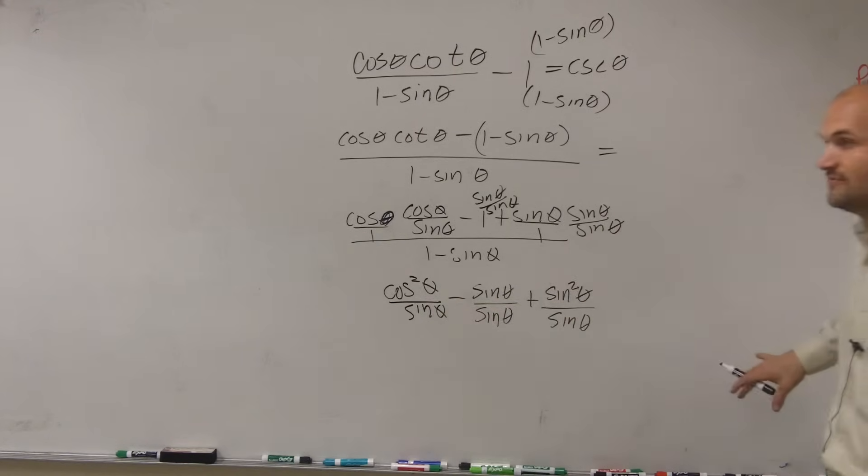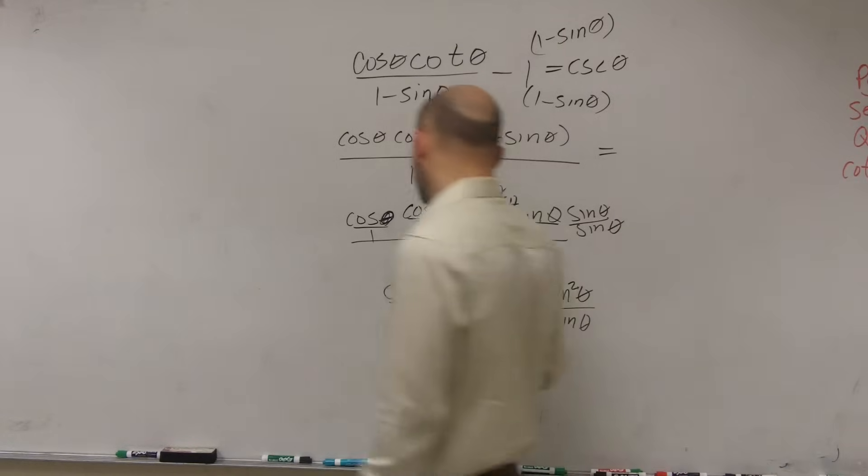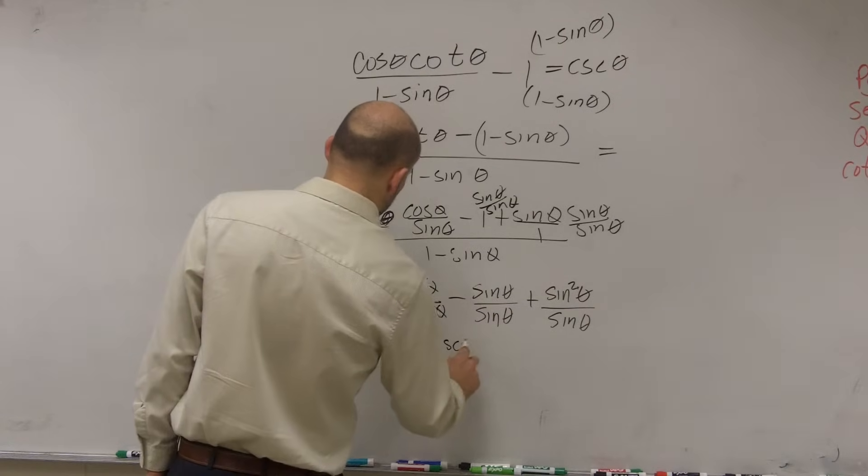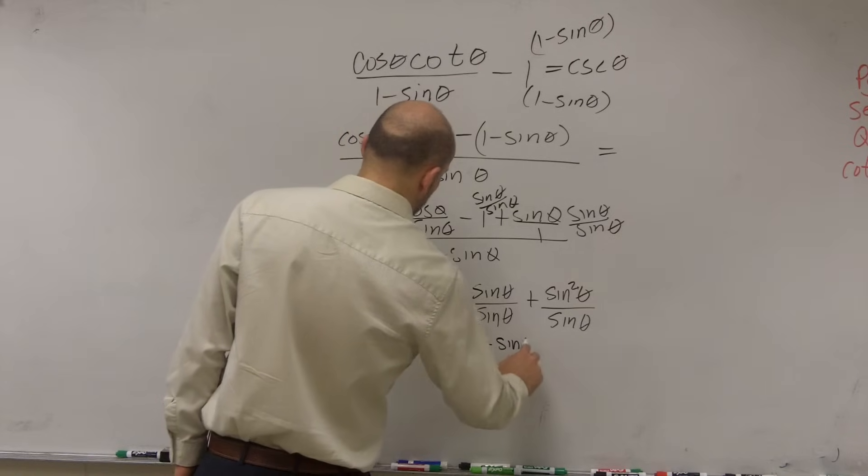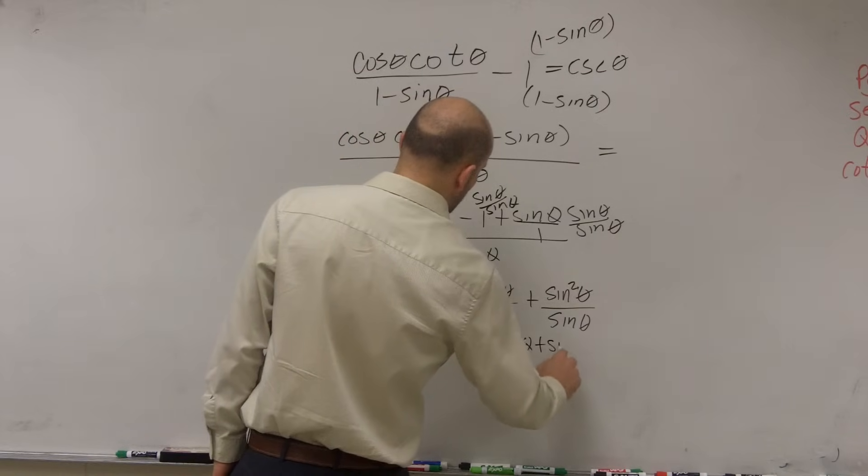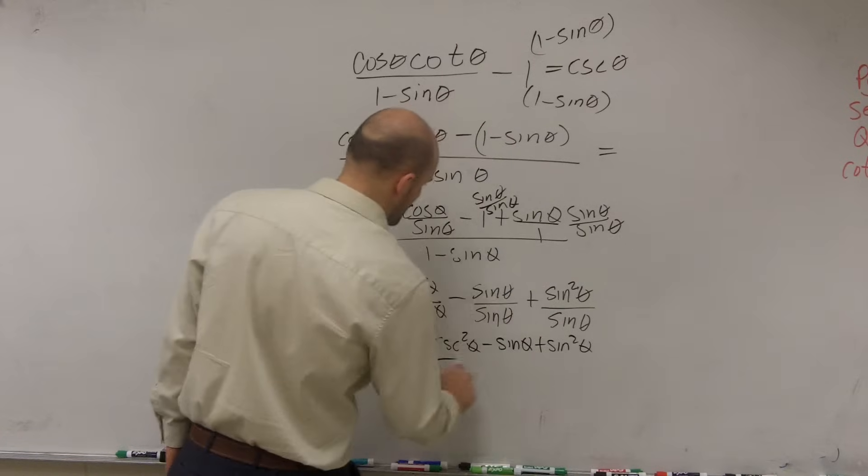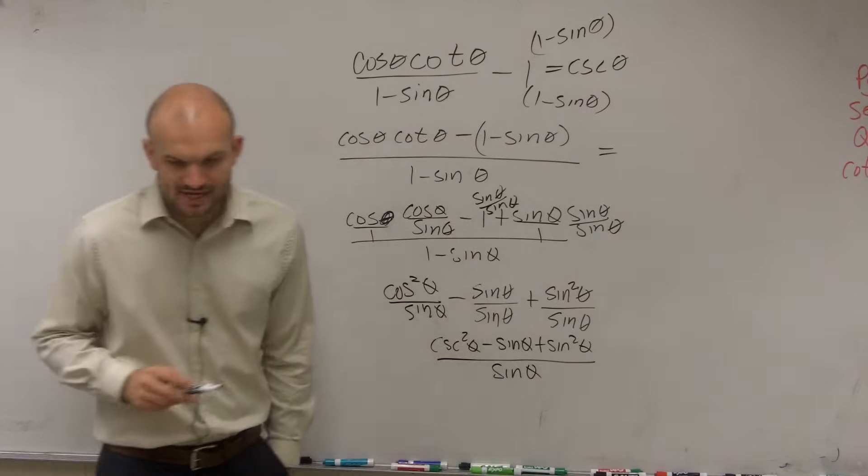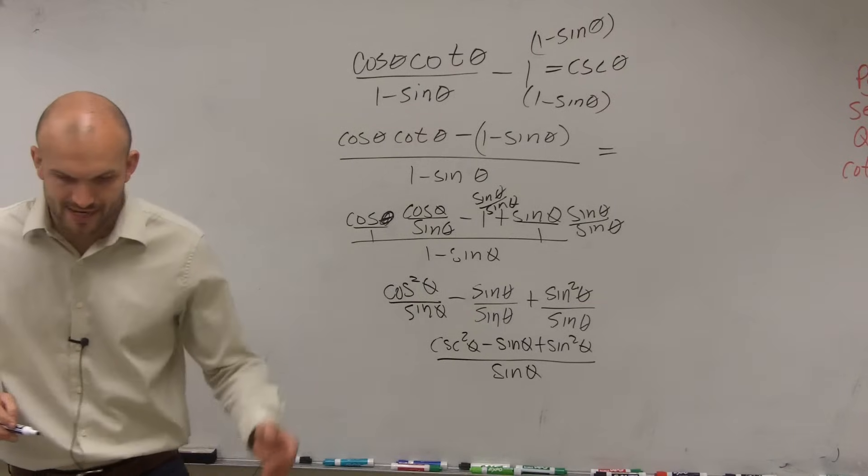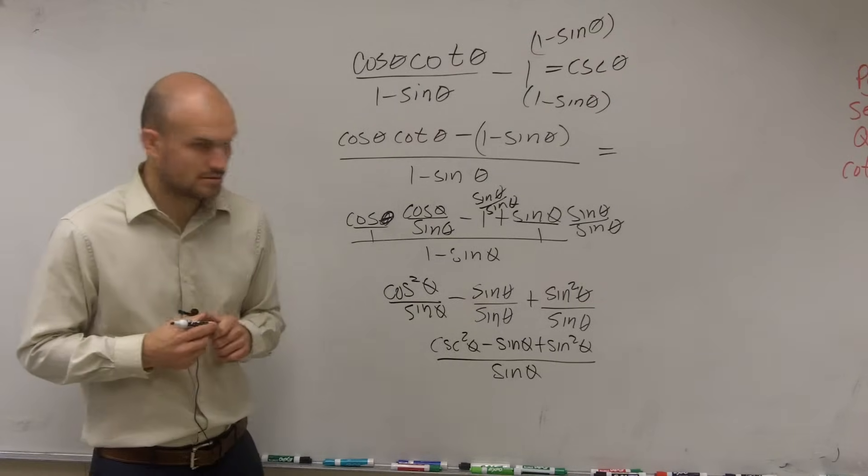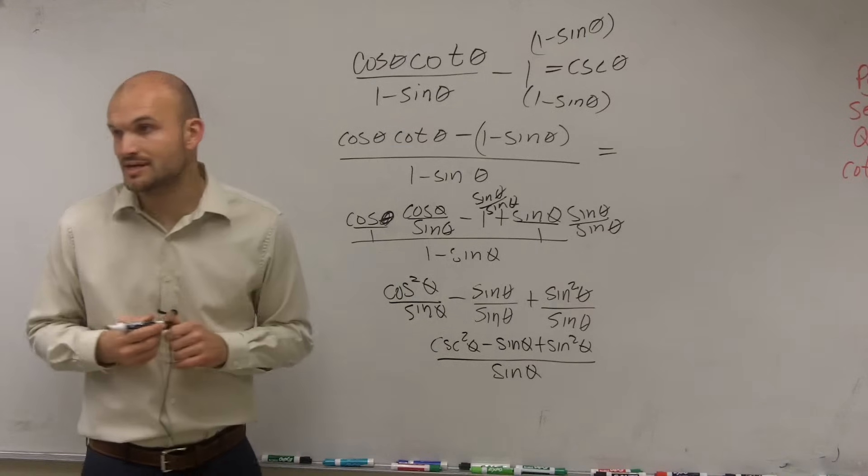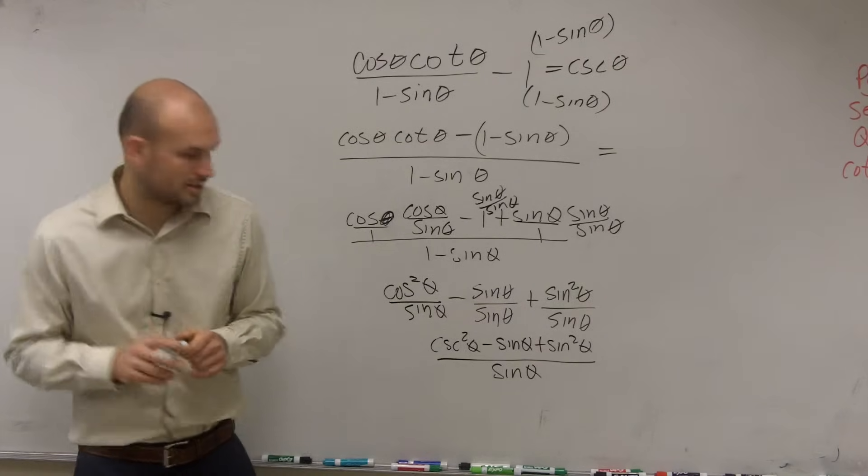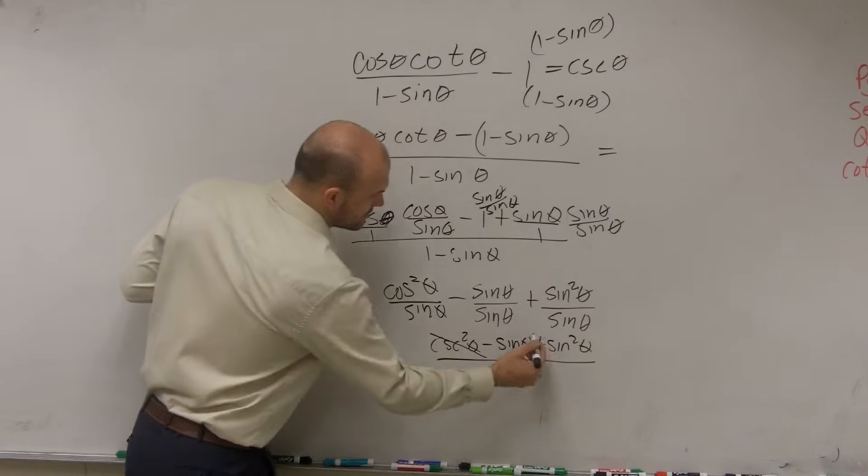So when simplifying these all, what I have is cosine squared of theta minus sine squared of theta plus sine squared of theta all over sine of theta. Now, cosine squared plus sine squared is going to add up to? Cosine squared plus sine squared adds up to 1.